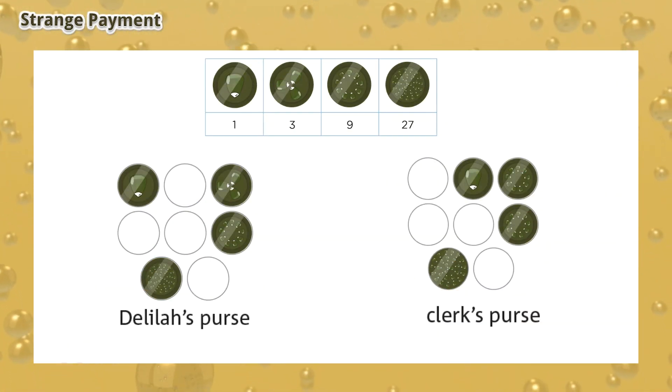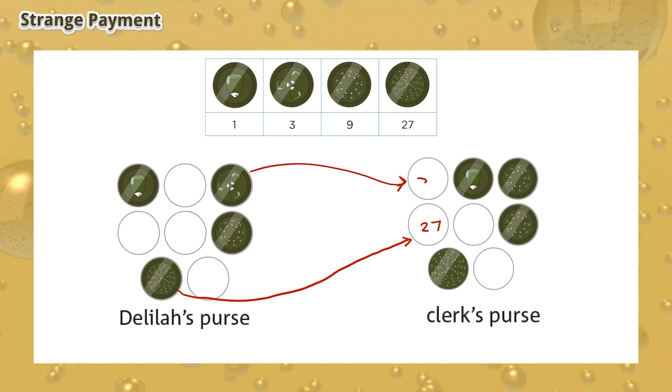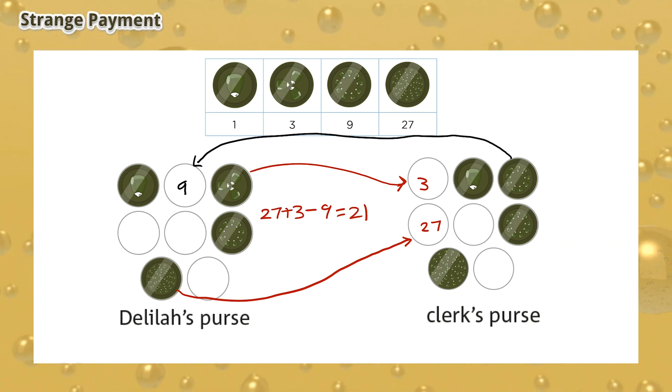In order for Delia to pay 21 beaver coins, she has to give a 27 beaver coin and a 3 beaver coin to the clerk and receive 9 beaver coin as change. This means that she pays a total of 21 beaver coins.